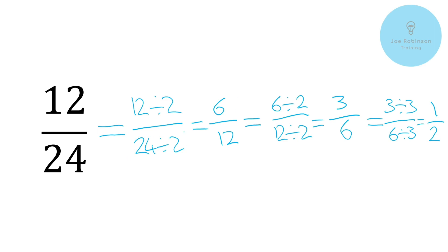Now a lot of you would have thought, why don't we just divide by 12 — which we absolutely could have done. But as these examples get more and more complicated, it may not always be that obvious. So this process will help you to simplify even if it takes a little while longer than perhaps we'd like. Just to re-emphasize a couple of really important points from the previous video: 12 twenty-fourths, 6 twelfths, 3 sixths, and 1 half are all exactly the same amount of value. They all represent the exact same quantity — we've just expressed it in different ways. So that's our first simplification done.